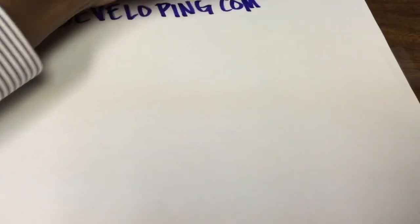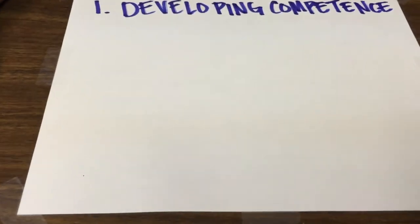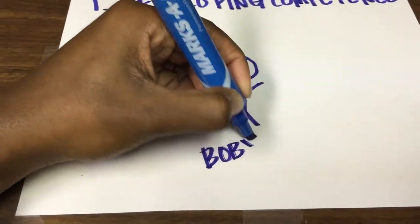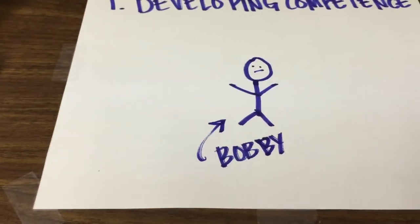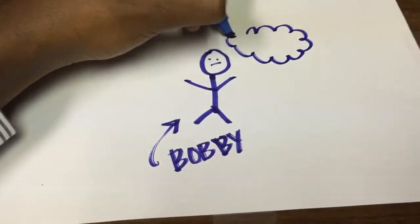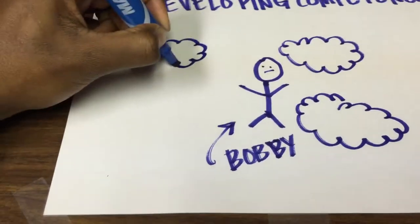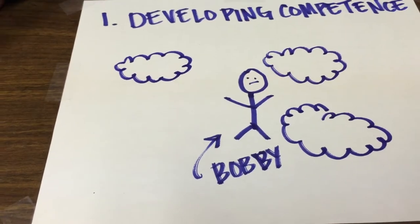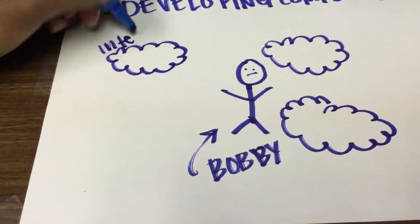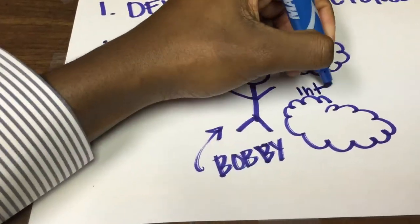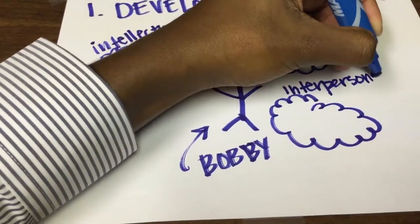The first vector is developing competence. Say that we have Bobby here who just joined a fraternity. There are three areas that Bobby will improve in this vector. These areas are intellectually, physically, and interpersonally.